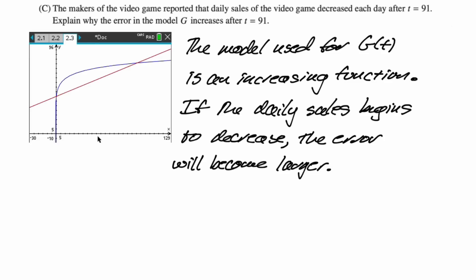Let's look at the next part, which I'll be honest with you, I've struggled to write up a solution to this. I'm not entirely sure what they're going for here. The makers of the video game reported that daily sales of the video game decreased each day after t equals 91. Okay, so they're telling you that the function is no longer increasing, it is now decreasing. Explain why the error in the model G increases after t equals 91. So I showed our graph again. Just look at the graph. The graph is always increasing. So I've written down the model used for G(t) is an increasing function. If the daily sales begin to decrease, then the error is just going to become larger, right? Because the model is increasing, the sales are decreasing. The difference between the model and reality is just going to keep deviating.